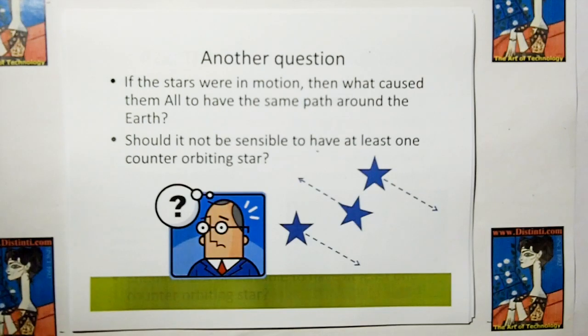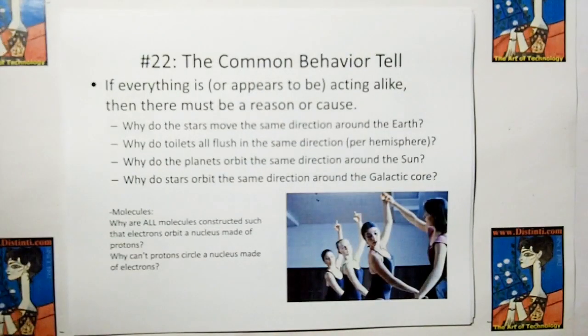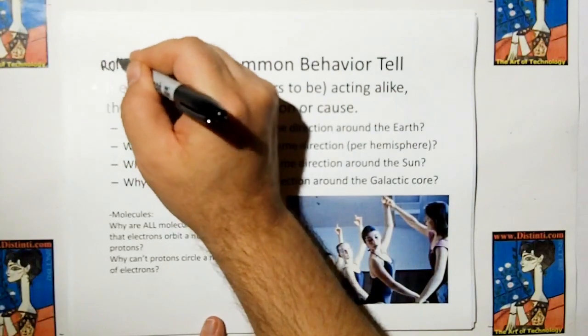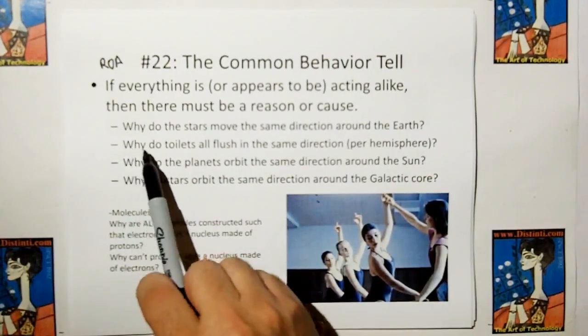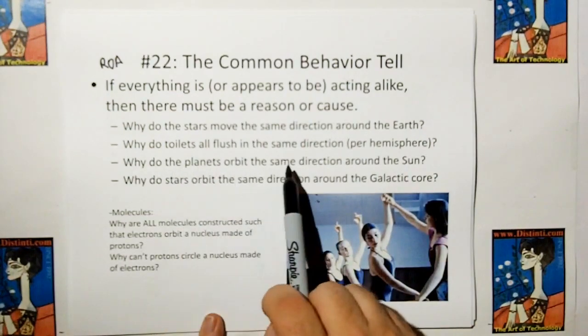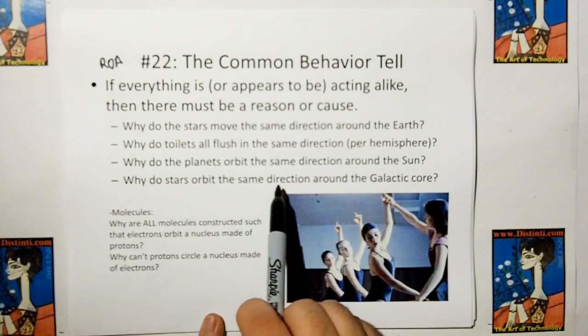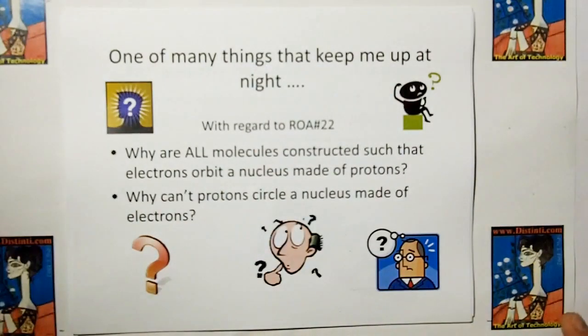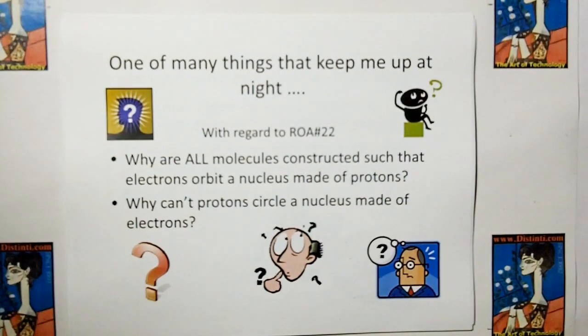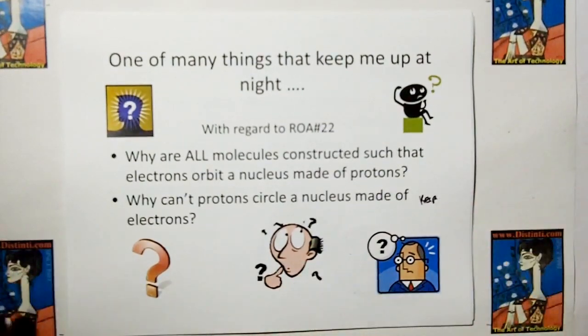Another question. If the stars were in motion, then what would cause them all to have the same path around the sun? I mean, should it not be sensible to have at least one counter-orbiting star? You know, I mean, why are they all working the same way? So, rule of acquisition number 22. A common behavior tell. If everything is or appears to be acting alike, then there must be a reason or cause. Like, why do the stars move in the same direction around the earth? Why do toilets flush in the same direction on a per-hemisphere basis? Why do the planets orbit the same direction around the sun? Why do stars orbit the same direction around the galactic core? And another one that keeps me up at night, with regard to rule of acquisition number 22. Why are all molecules constructed such that electrons orbit a nucleus made of protons? Why can't protons circle around a nucleus made of electrons? This is a case of reciprocal thinking. Or is it happening? Is there a combination of both?